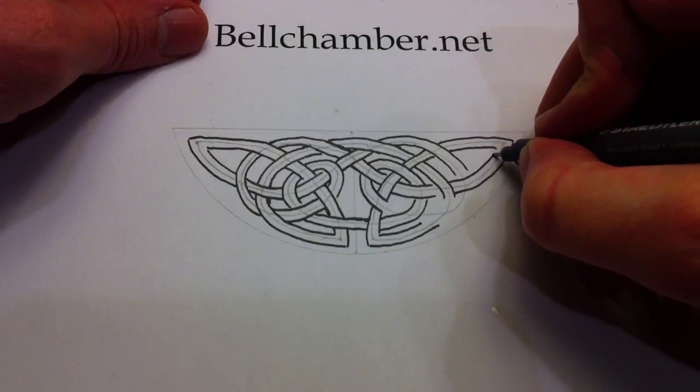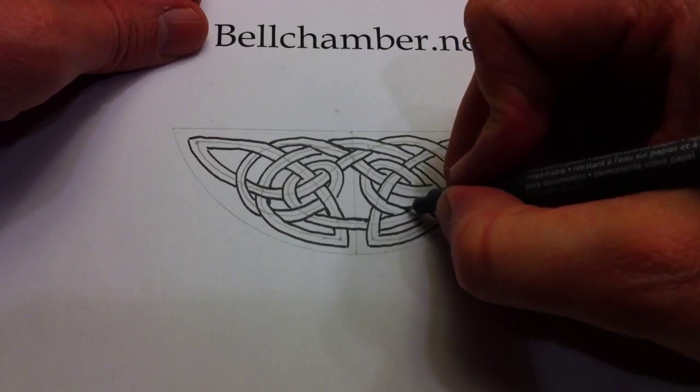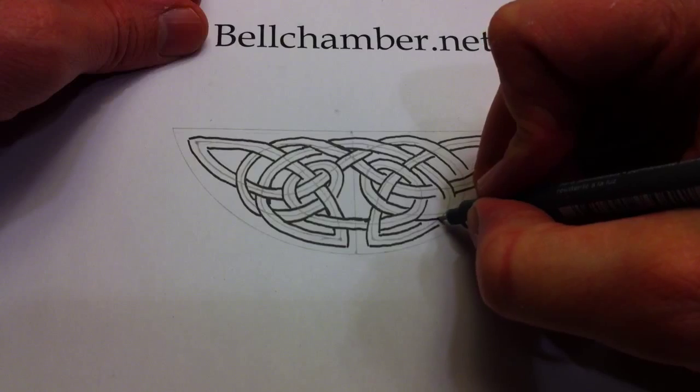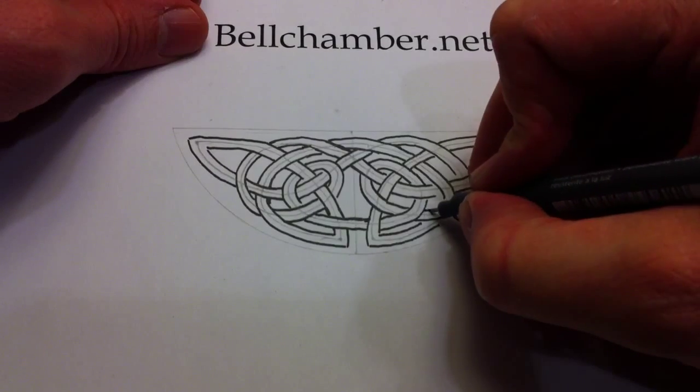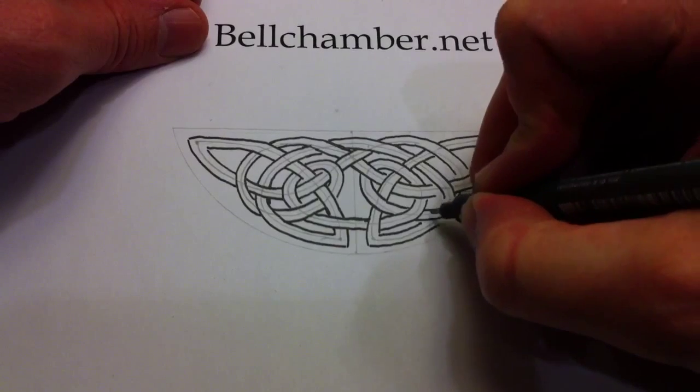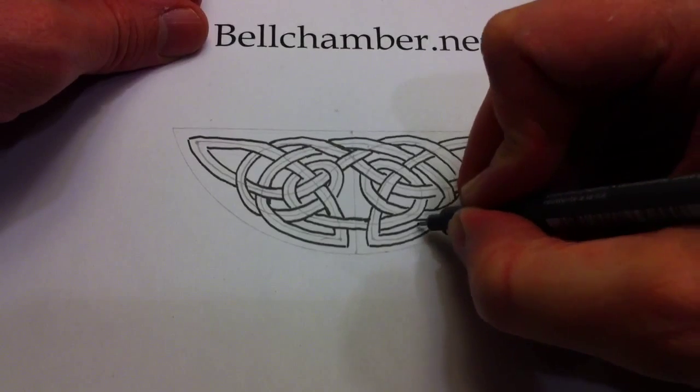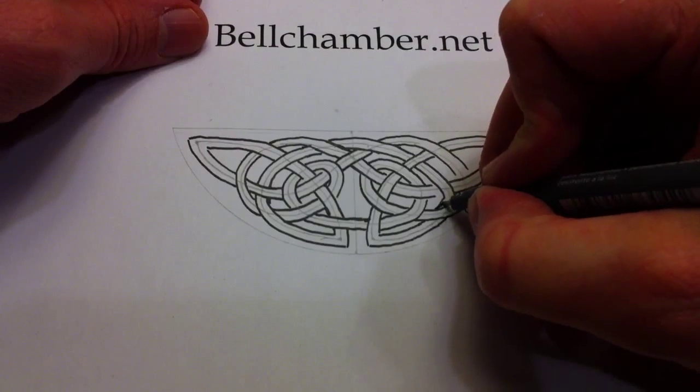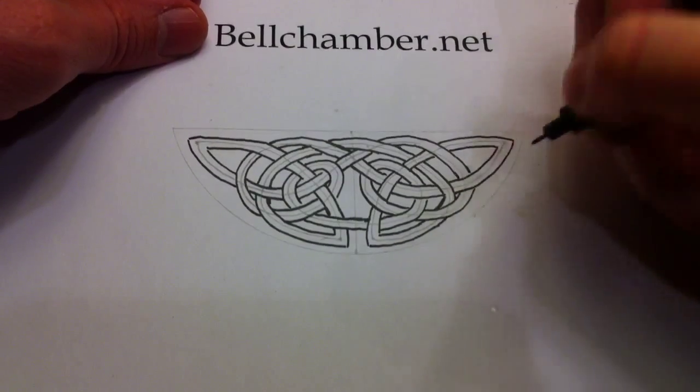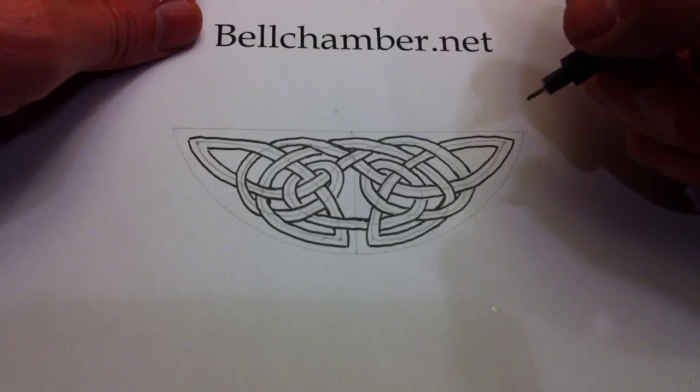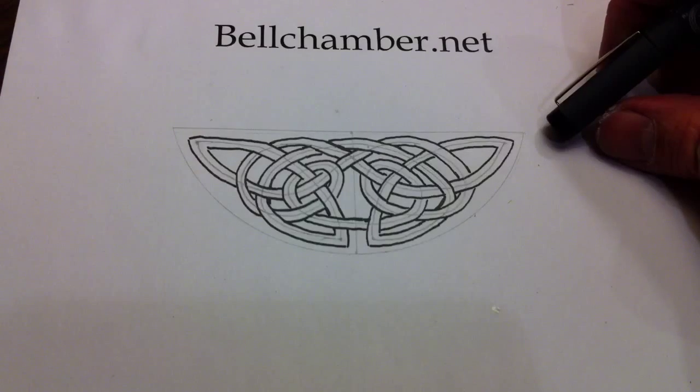All right. We're closing in on the end. There. Almost done the optical illusion of this. Going under and over. Right. So there's our spine of the design. I'm going to pause this and go into part three.